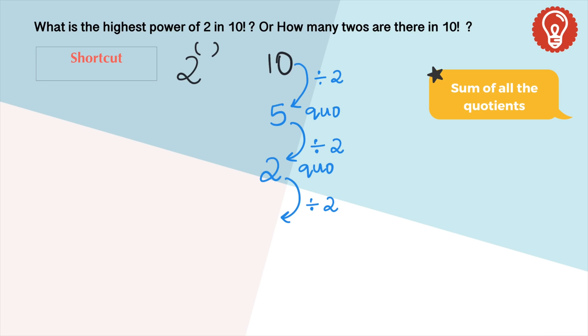Now stop the calculation once you come across the number which is smaller than the number that you are dividing with. Now add all the quotients, which is 8. So the highest power of 2 is 8.